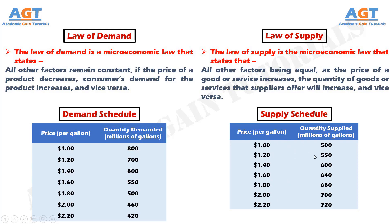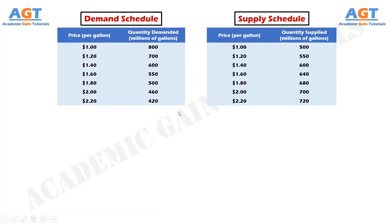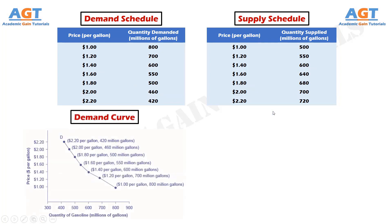According to the law of supply, as the price increases, the supply increases from the supplier's end, and as the price decreases, the supply also decreases from the supplier's end. From the Demand Schedule we will get the Demand Curve, and from the Supply Schedule we will get the Supply Curve.